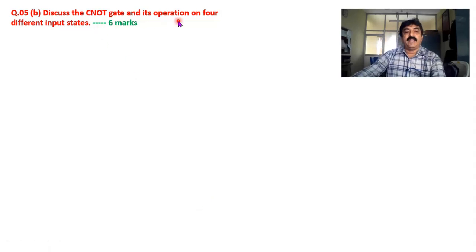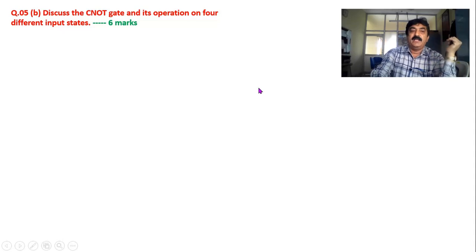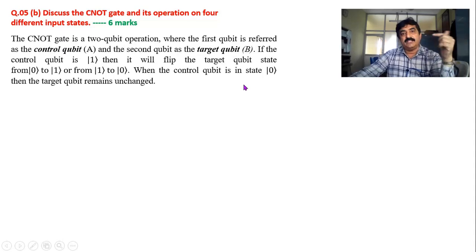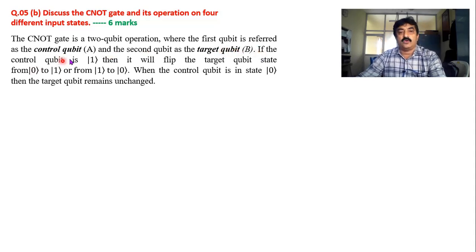Now coming to discuss the C-NOT gate and its operation on four different inputs. Remember there will definitely be one gate question — either single qubit gate or multi qubit gate. This is a multi qubit gate. The C-NOT gate is also known as the control-NOT gate and it is a two-qubit operation where the first qubit is considered the control qubit and the other one is called the target qubit.